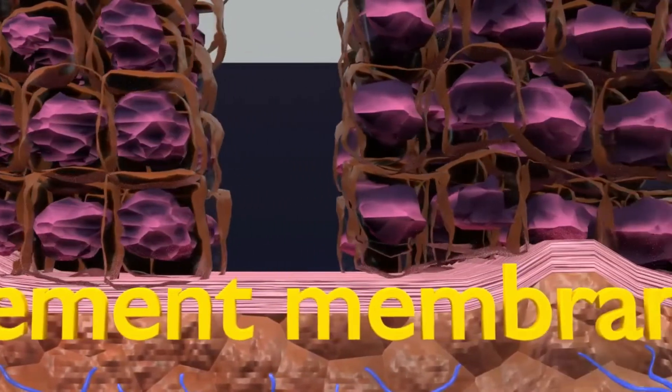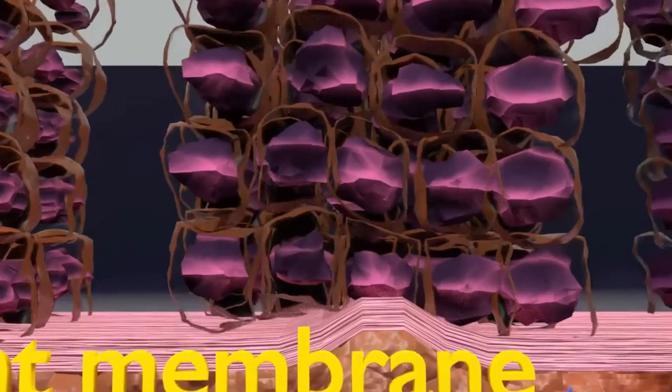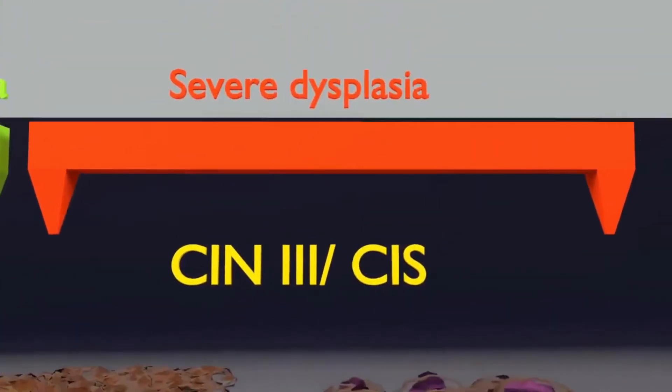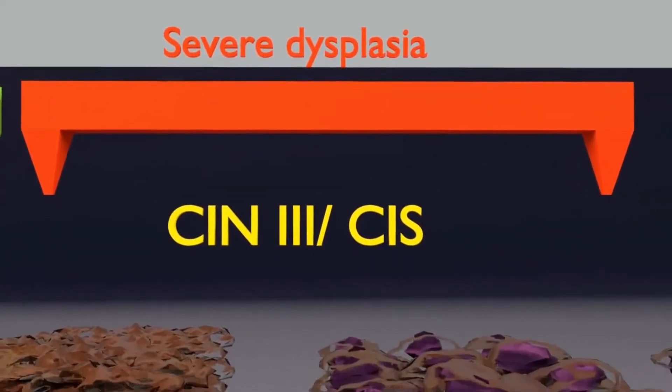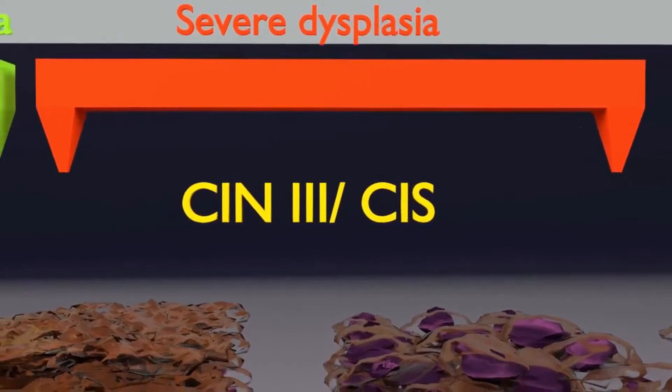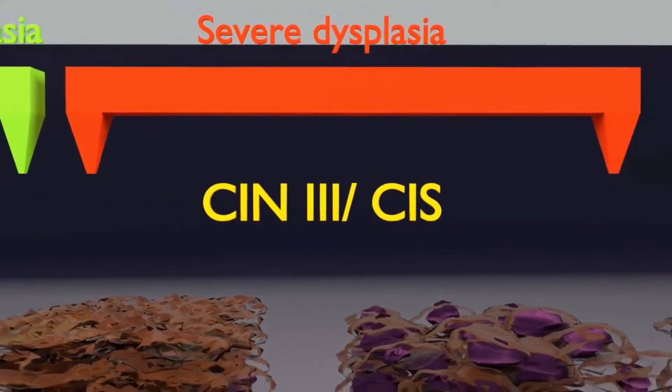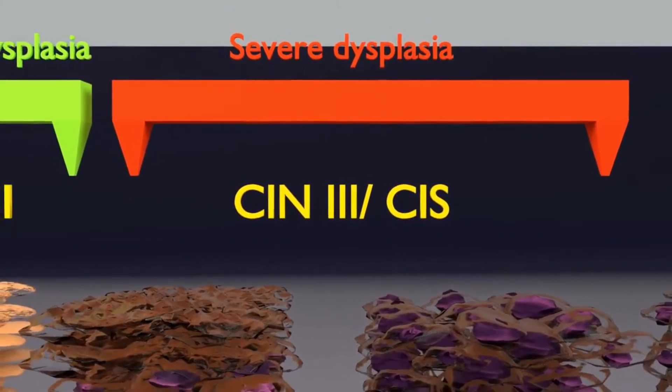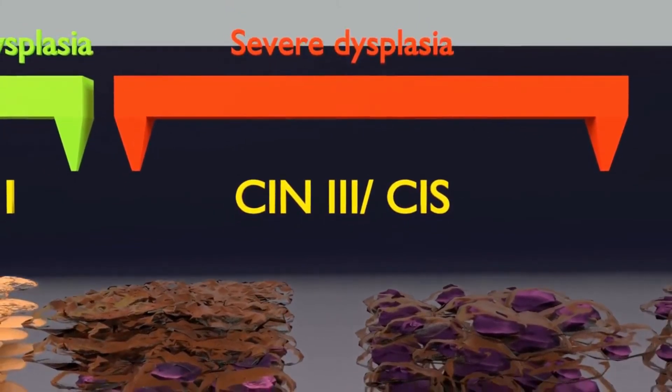And now let's talk about severe dysplasia, which is also called cervical intraepithelial neoplasia 3 or CIN3 or carcinoma in situ or CIS. As you see in CIN3, there is full thickness epithelial involvement by tumor cells, although some degree of superficial maturation is still present.